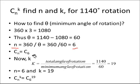So C N will be C 6. Now you got the value of N. Now to find out the value of K. K can be calculated as total angle of rotation divided by minimum angle of rotation.